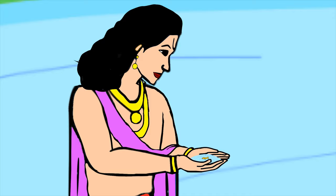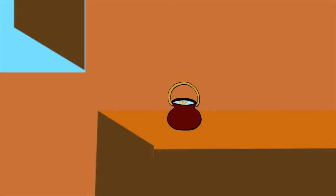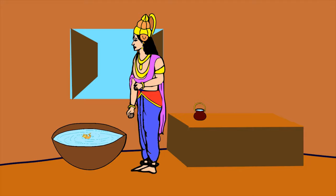He appeared in the king's hands as a tiny fish and asked for his protection from bigger creatures in the river. The kind-hearted Satyavarat put the fish in his commandal. But within hours, the fish outgrew the commandal and Satyavarat had to move it to a larger vessel.